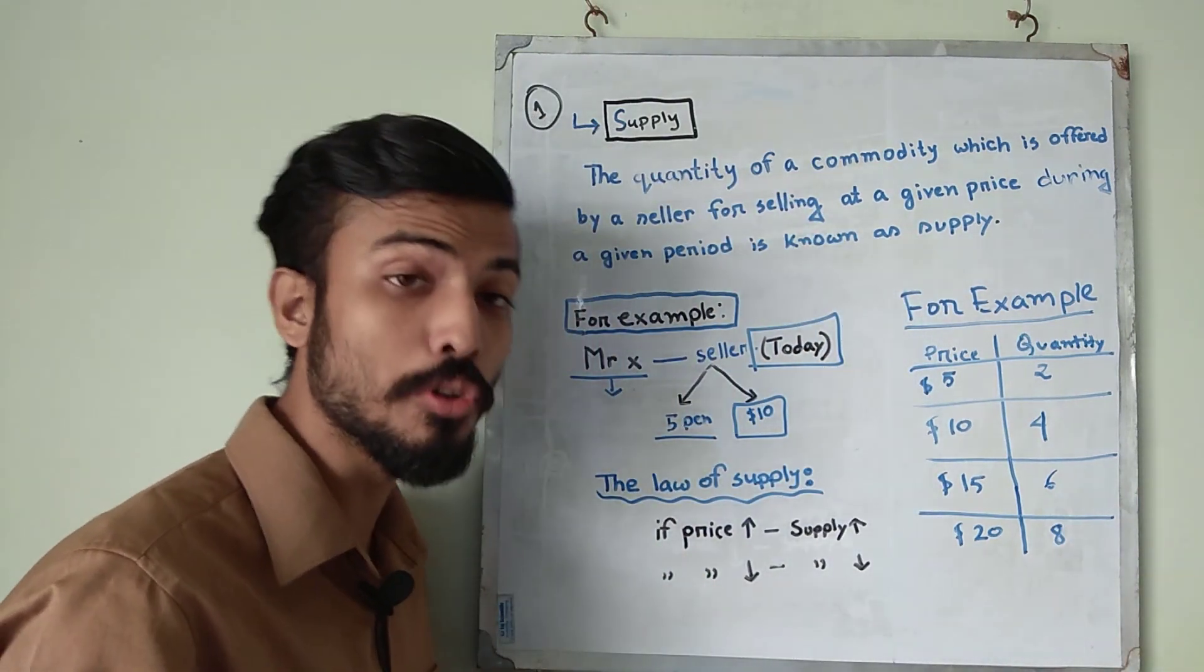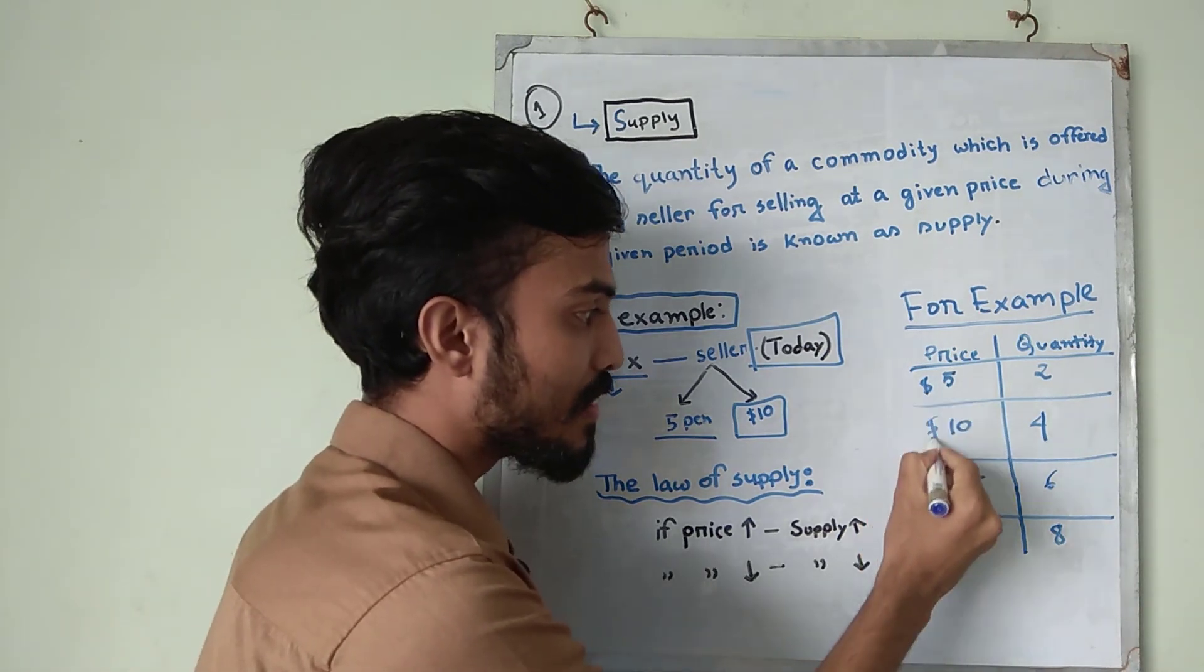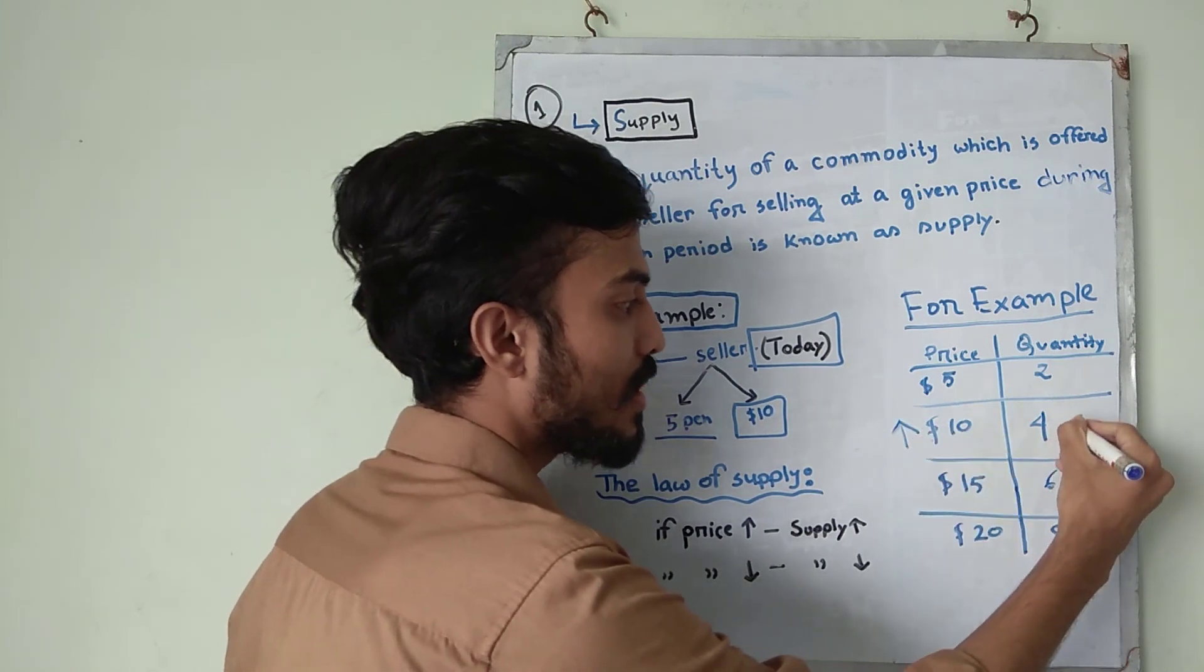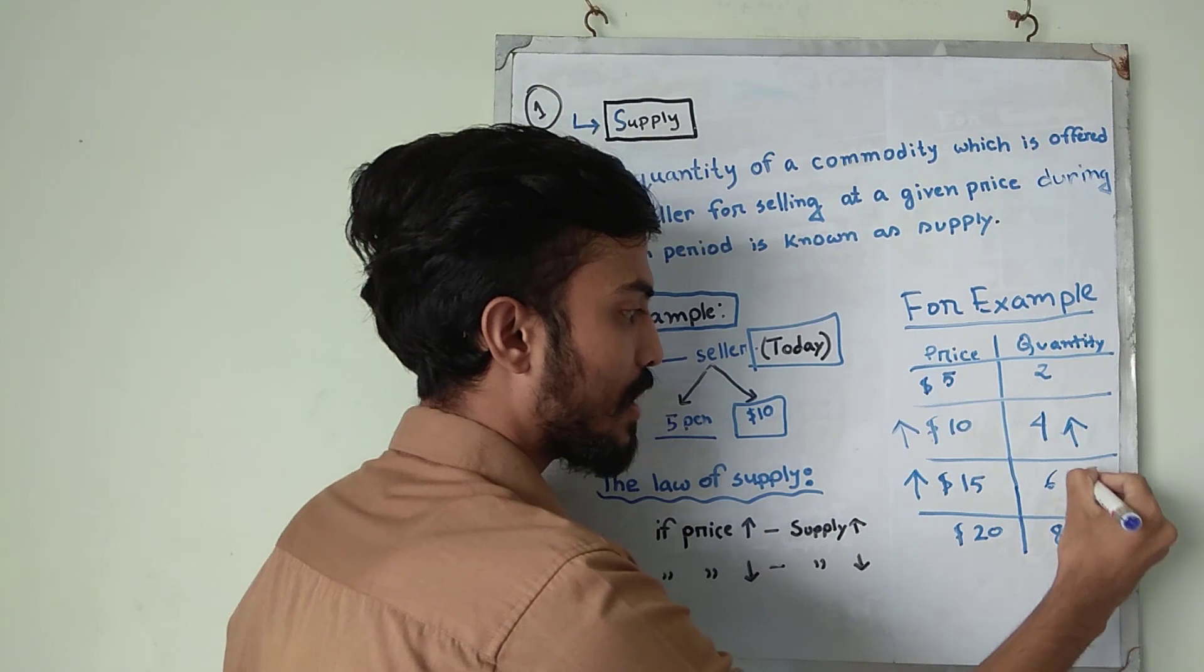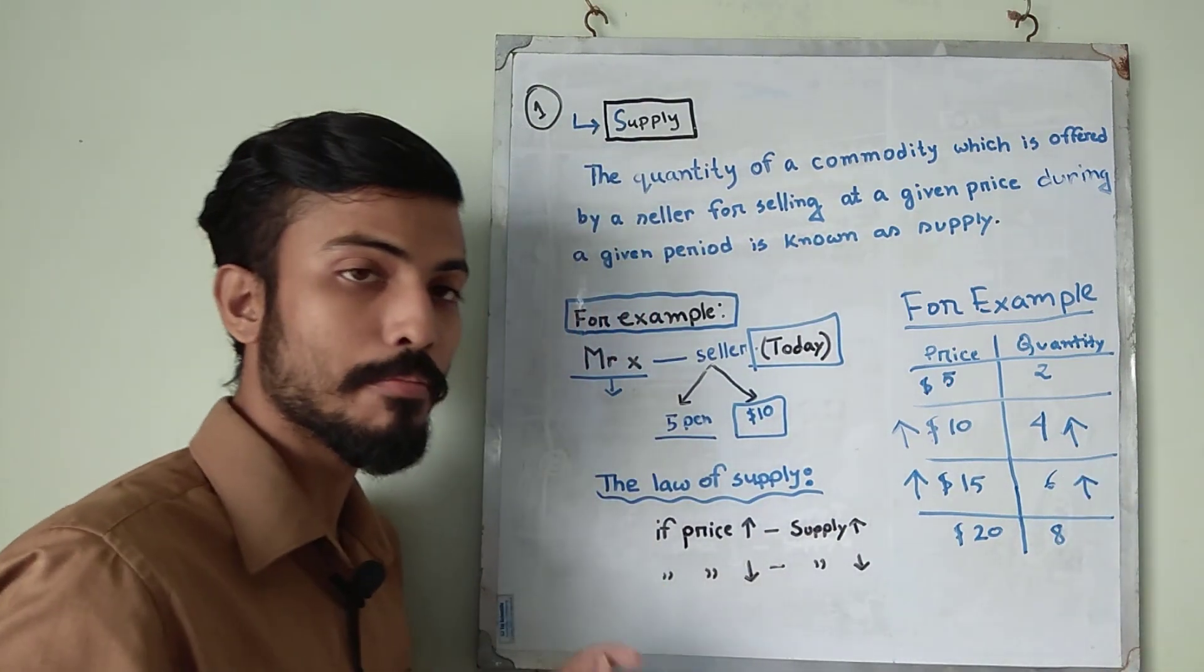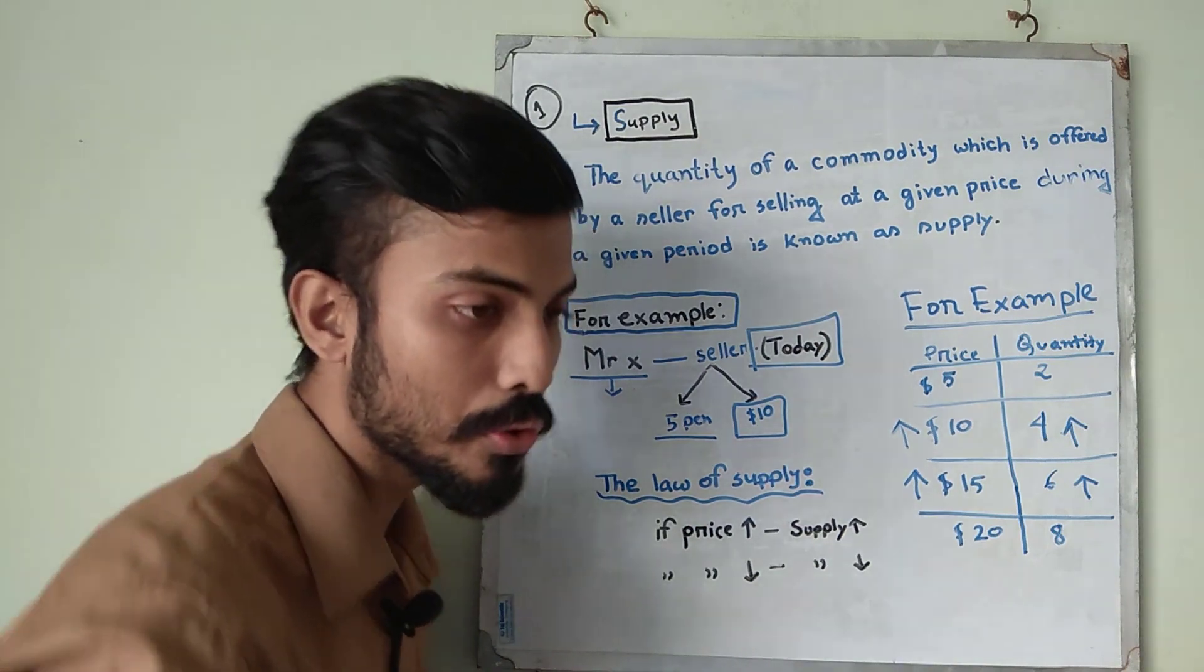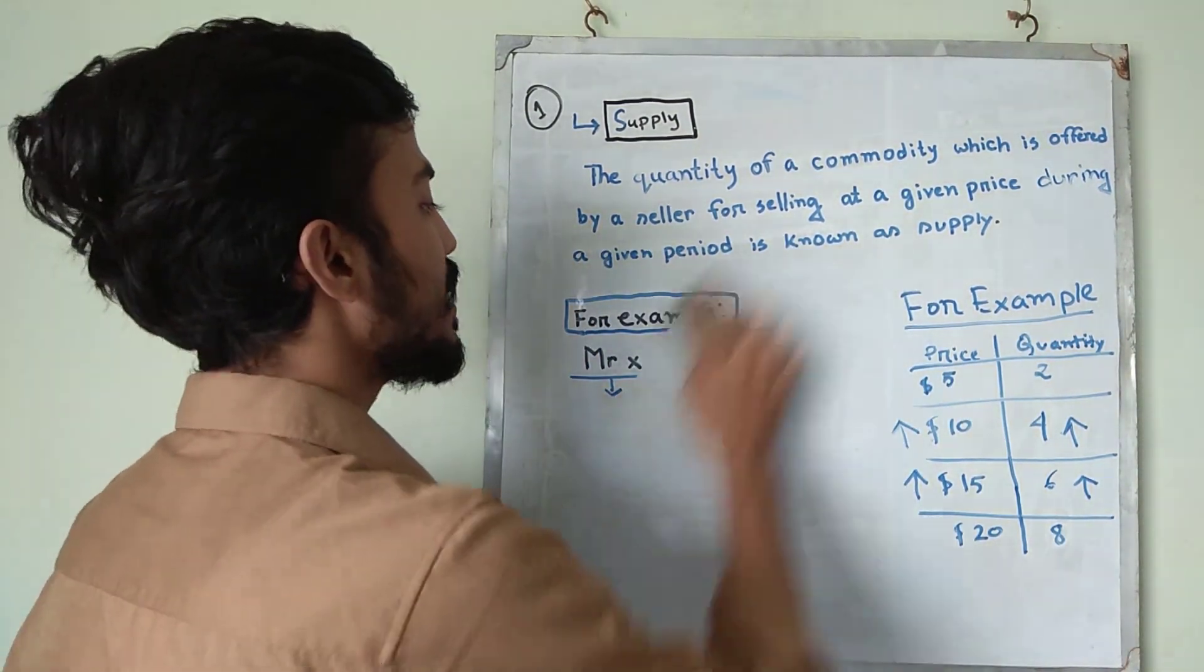So what is exactly going on? Whenever price is increasing, you are increasing your supply. That means the law of supply is working here. Now we will discuss on supply schedule and supply diagram.